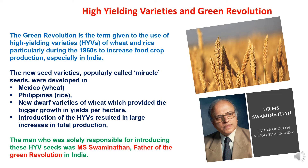High yielding varieties and their role in the Green Revolution. The Green Revolution is the term given to the use of high yielding varieties of wheat and rice, particularly during the late 1960s, to increase food crop production, especially in India. The new seed varieties, popularly called miracle seeds, were developed in Mexico for wheat and in the Philippines for rice. But it was the new dwarf varieties of wheat which provided the bigger growth in yields per hectare. The man solely responsible for introducing high yielding varieties of seeds in India was Dr. M.S. Swaminathan, known as the father of the Green Revolution in India.